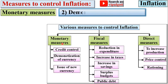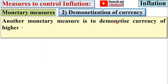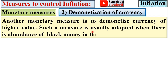Under monetary measures, the next subcategory is demonetization of currency. Another monetary measure is to demonetize currency of higher denomination. Such a measure is usually adopted when there is an abundance of black money in the country.